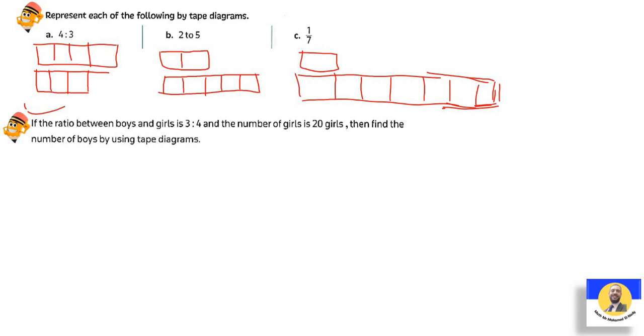The next: If the ratio between boys and girls is 3:4, and the number of girls is 20 girls, then find the number of boys by using tape diagram. We have boys and girls. Boy is only 3: 1, 2, 3. And girls here is 4. The number of girls is 20. So each one will be what? We have 4, so 20 divided by 4 will be 5. So each tape diagram will be 5. So 5 by 3 will be the number of boys, equals 5 by 3, it will be 15.